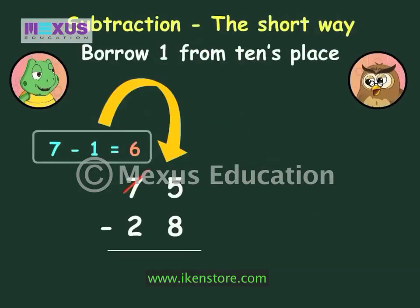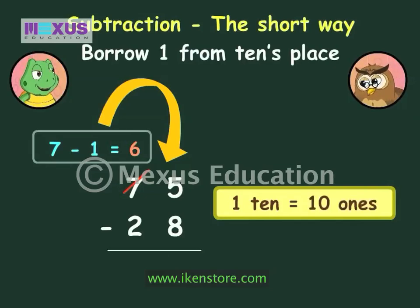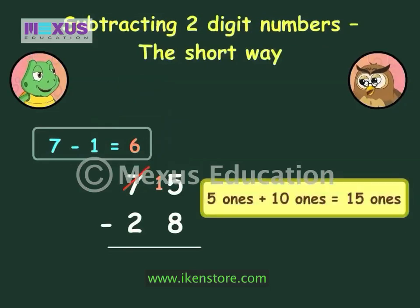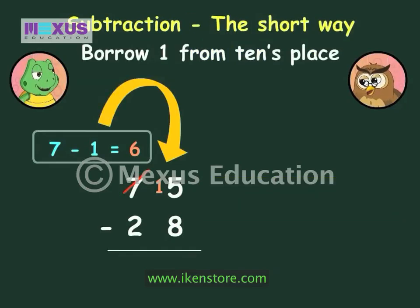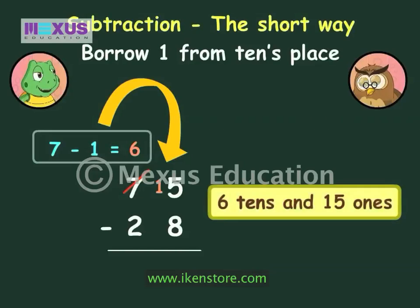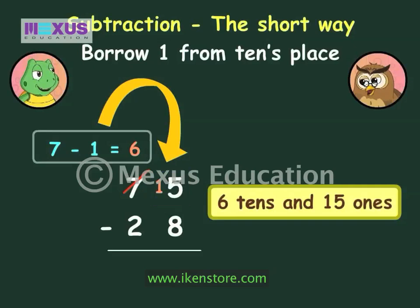Now, recall that 1 ten is equal to 10 ones. Add 10 ones to the 5 ones to get 15 ones. So we have 6 tens and 15 ones. Now, 15 is bigger than 8.